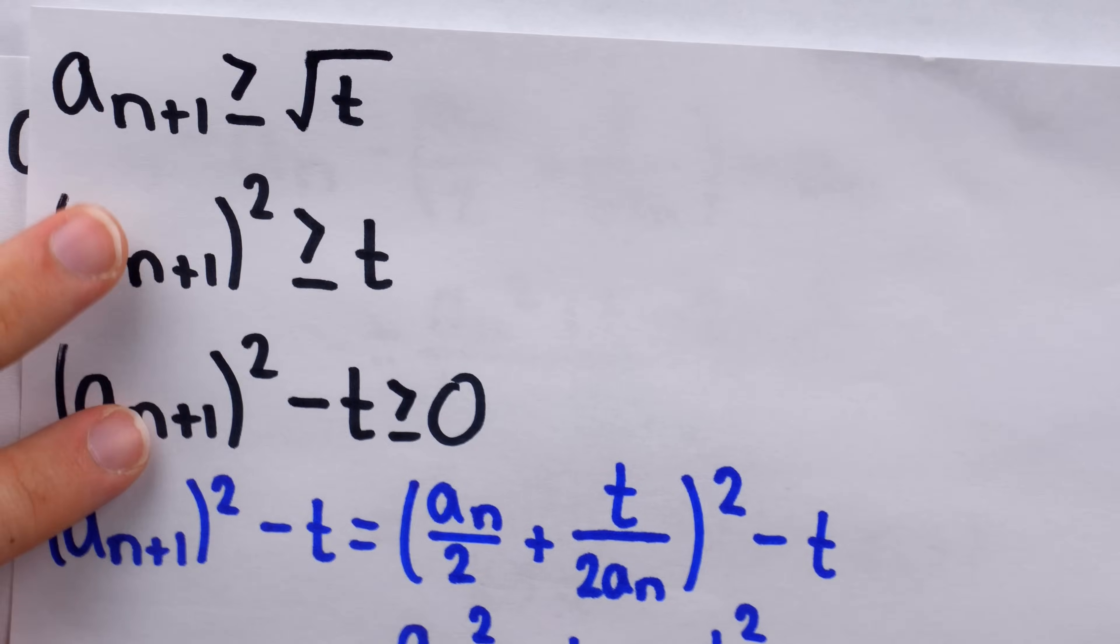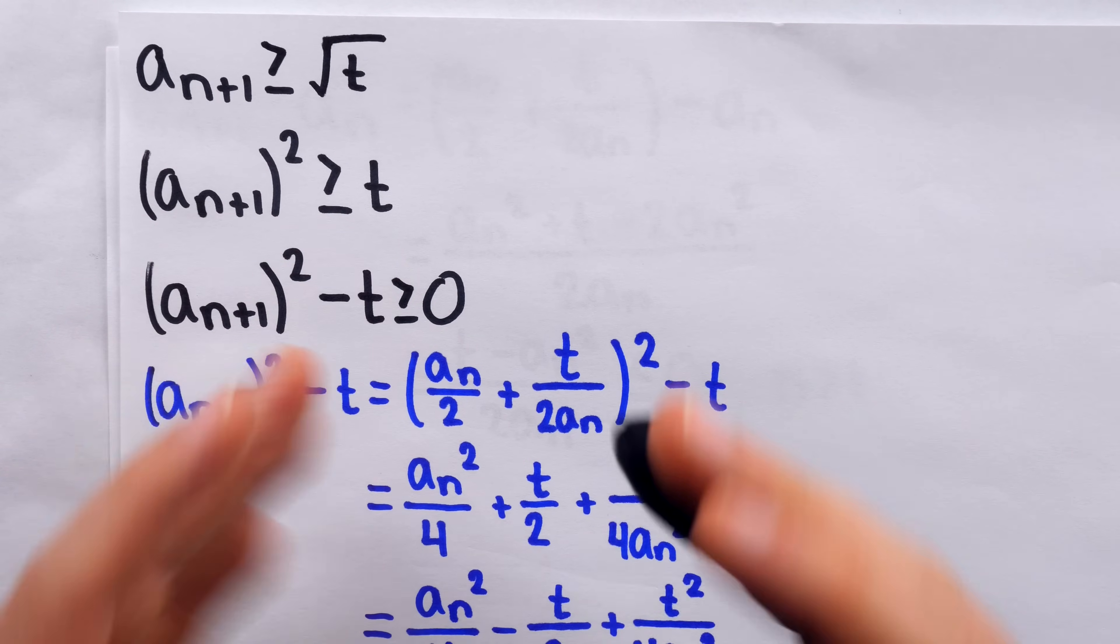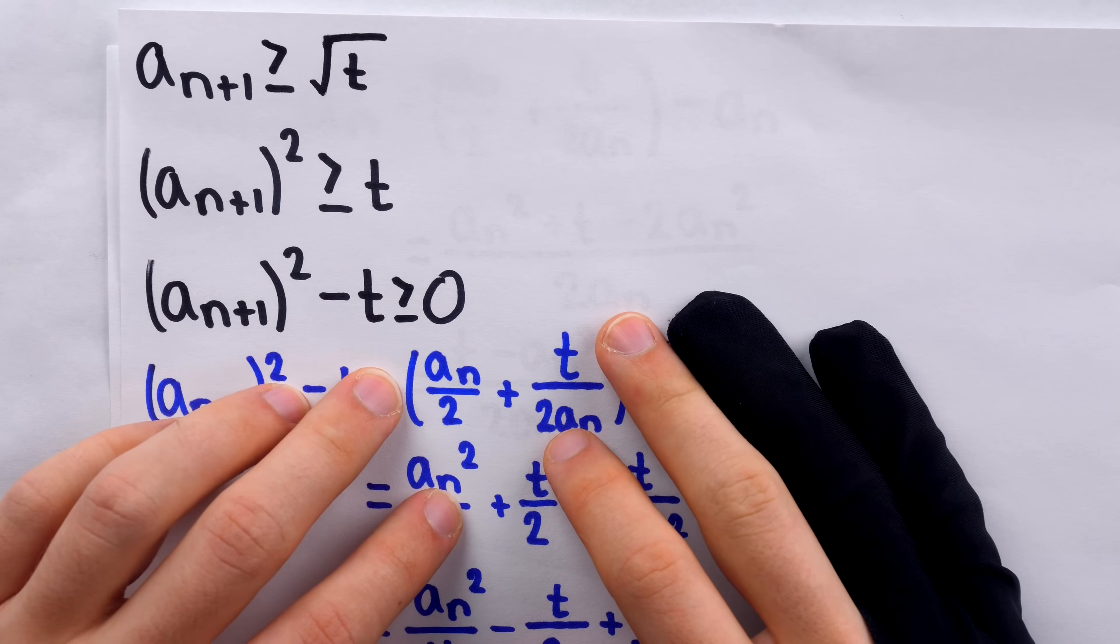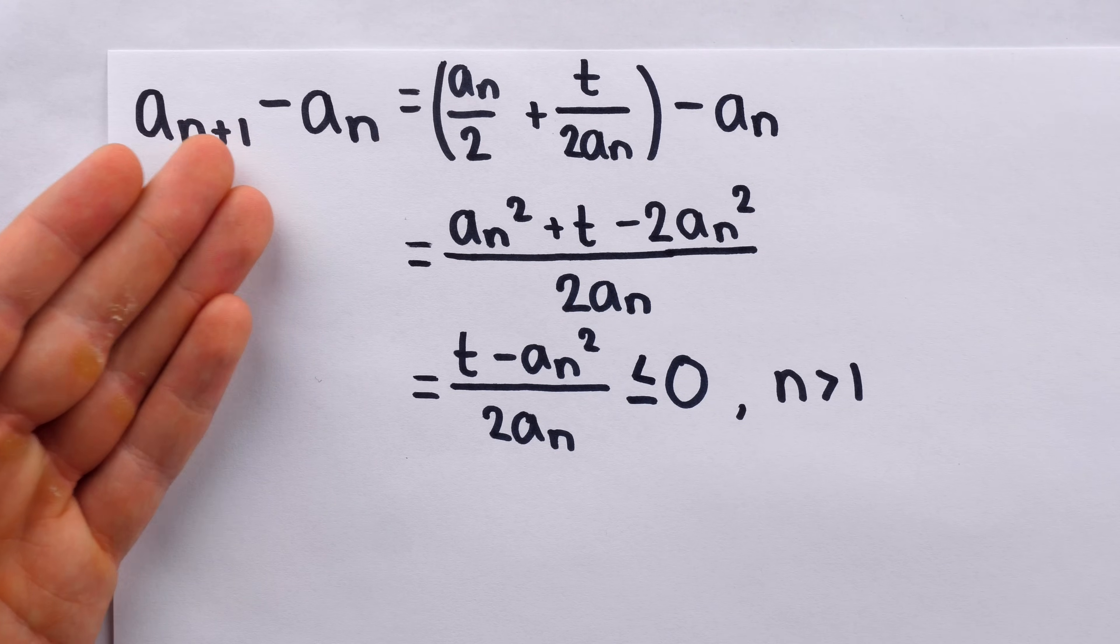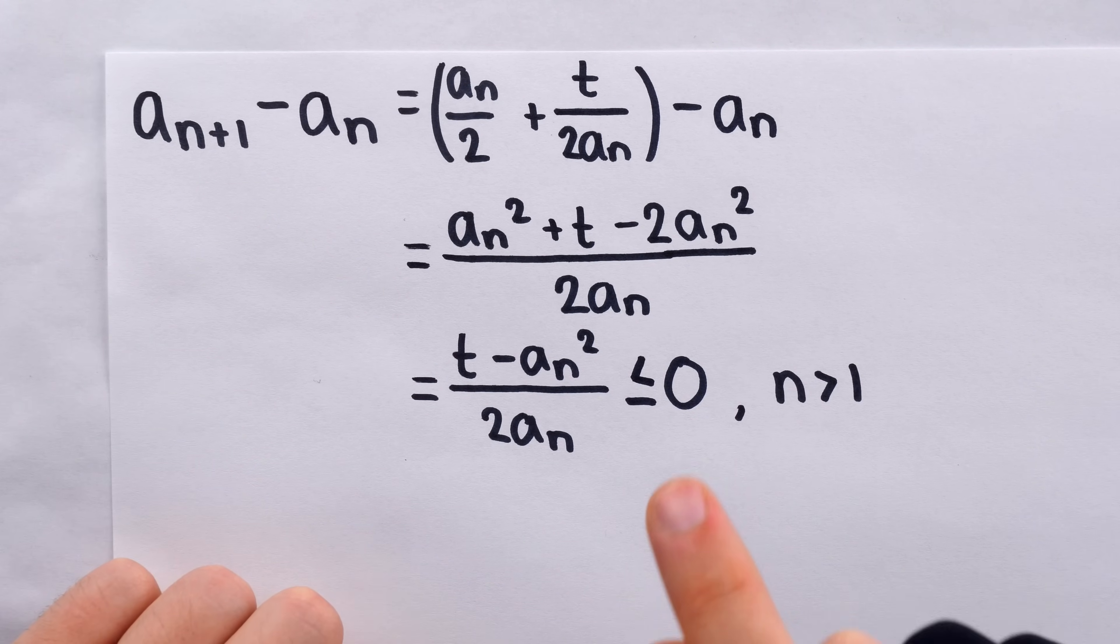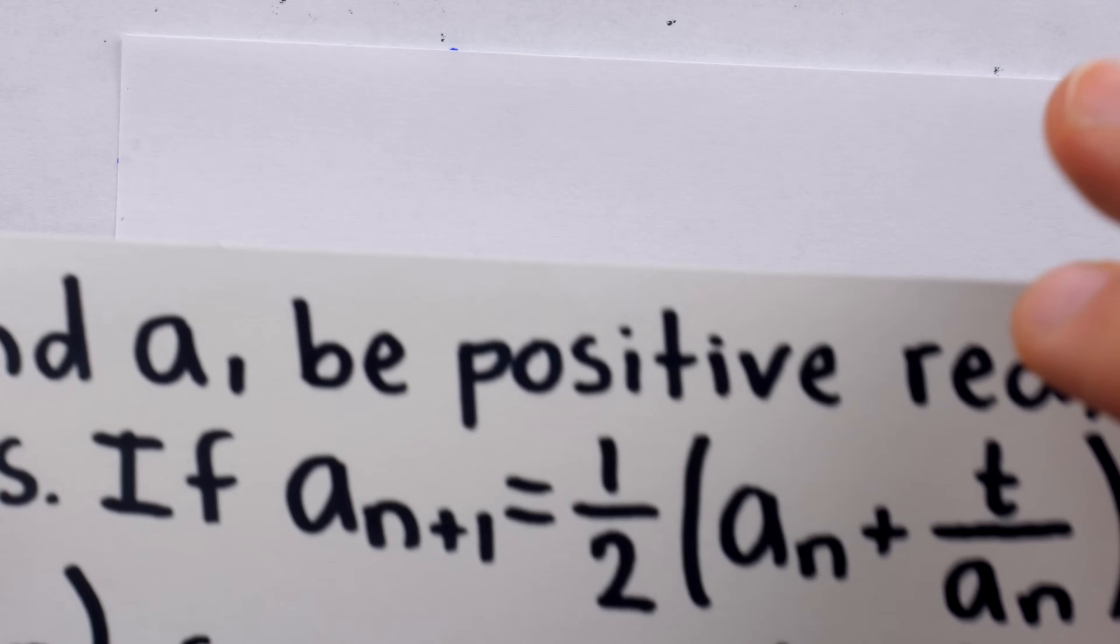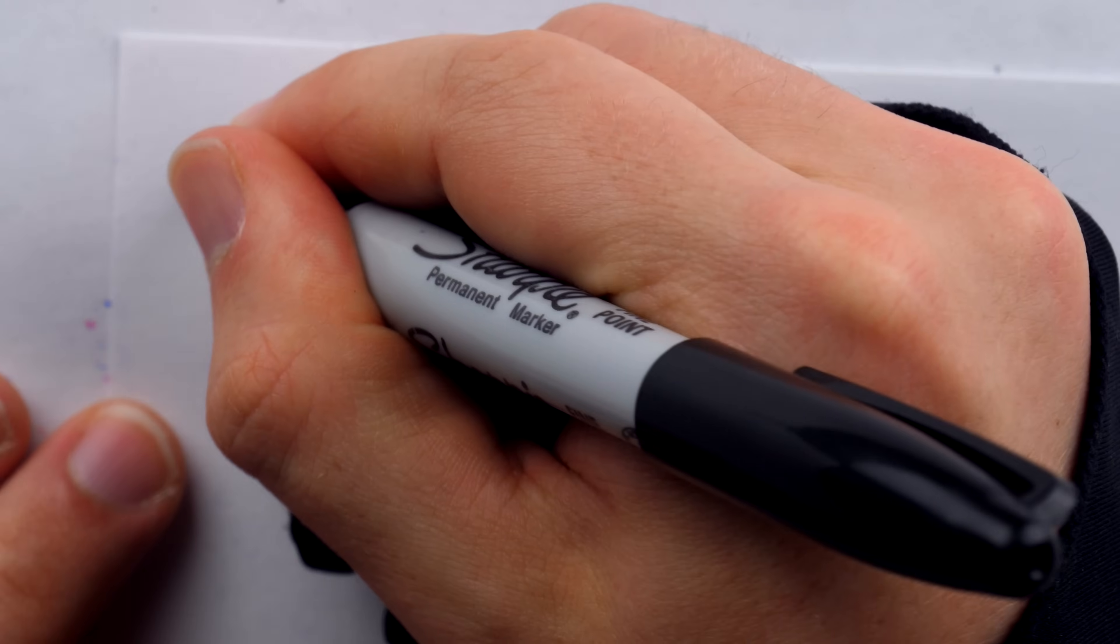Alright, first two steps of our argument are done. Now, we can use the monotone convergence theorem. We know that our sequence has a limit. It has to because it's bounded below and it's monotone. It is decreasing. It doesn't go up and down and all around. It just goes down.